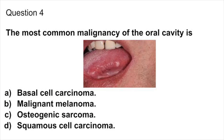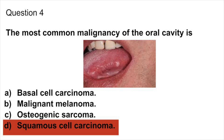Question 4. The most common malignancy of the oral cavity is: basal cell carcinoma, malignant melanoma, osteogenic sarcoma, or squamous cell carcinoma? Answer: squamous cell carcinoma. The lower lip is most commonly affected, and the lateral border of the tongue is also affected. The genes involved in head and neck squamous cell carcinoma include tumor suppressor genes (TSGs).